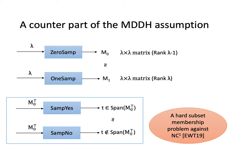This problem says that it's hard to distinguish a vector sampled from SampYes and a vector from SampNo for an NC¹ adversary. Let M₀ᵀ be the inputs of SampYes and SampNo where M₀ is from 0-SAMP. SampYes samples vectors from the span of M₀ᵀ, whereas SampNo samples vectors outside the span of M₀ᵀ.